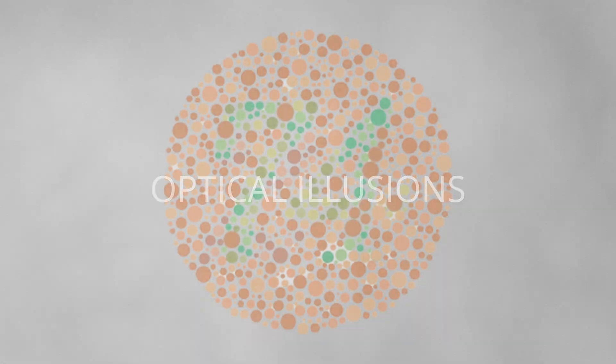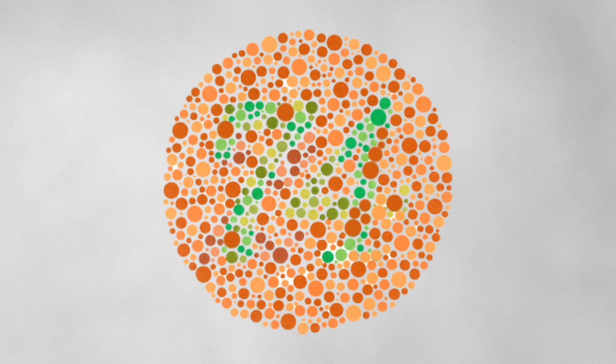Colorblindness Test: What number do you see? People with normal color vision, who can distinguish all three primary colors — red, green, and blue — will see the number 74. People with red-green colorblindness, the most common type, cannot distinguish red from green and will see the number 21.